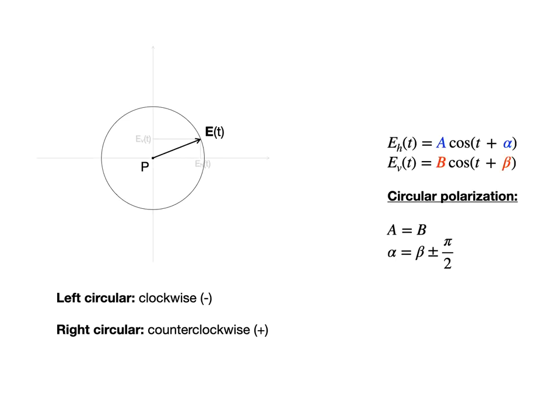When the polarization is circular, the amplitudes A and B are equal, and the phases alpha and beta are shifted by 90 degrees relative to each other.